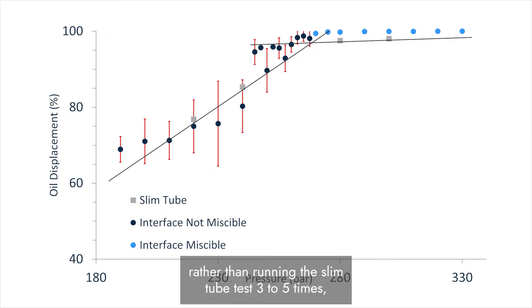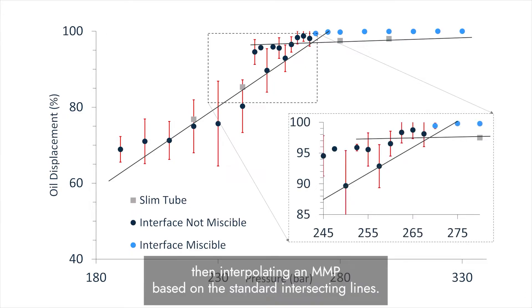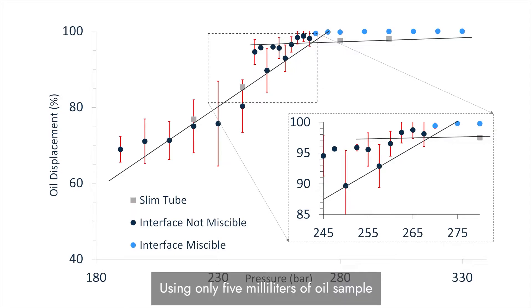Rather than running the SLIM tube test 3 to 5 times, then interpolating an MMP based on the standard intersecting lines, what we have done here is make 40 measurements over 4 days. Using only 5 milliliters of oil sample to conduct the measurements means we get a final data cloud with no interpolated results.